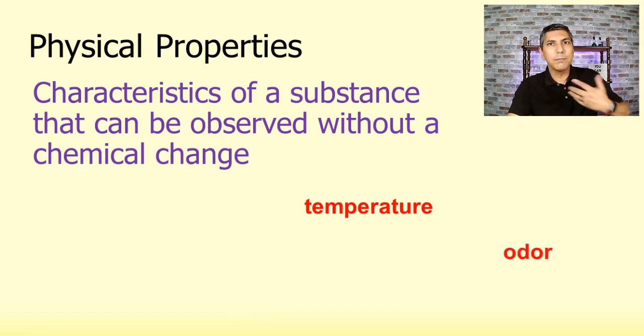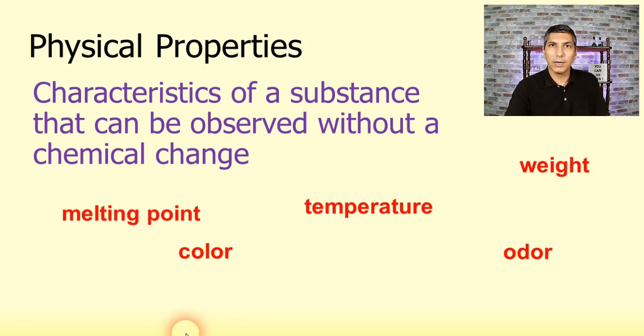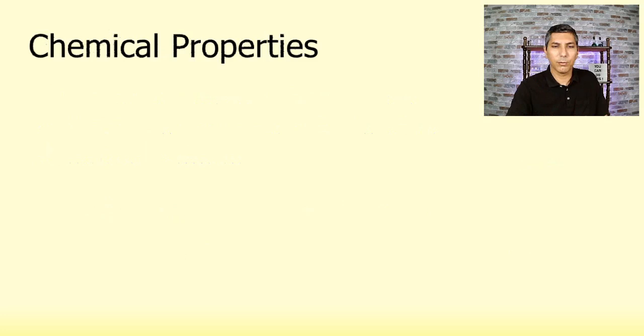Likewise, odor, we can smell something and we can identify what that substance is very often. Maybe it's a vinegar or some other substance that has a very distinctive odor. The color of something, we just look at something with our eyes and that's a physical property. How about weight? We can take an object, put it on a scale, and we can see what it weighs. That's a physical property. Or an object's melting point. Some students get a little tripped up on this because melting point is just physical. We're just changing from a solid to a liquid when something's melting. So that is a physical property as well.